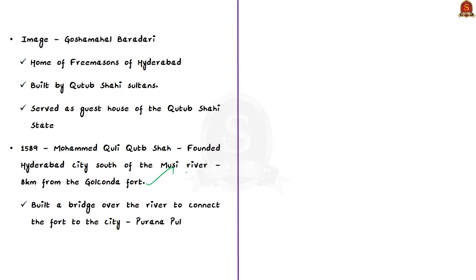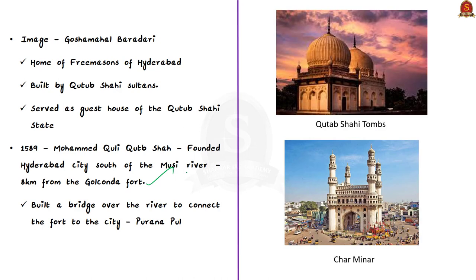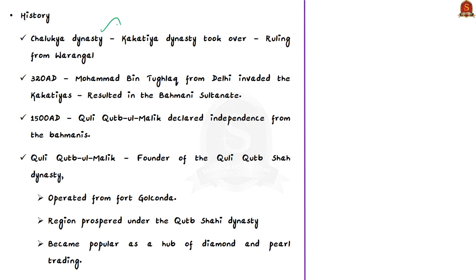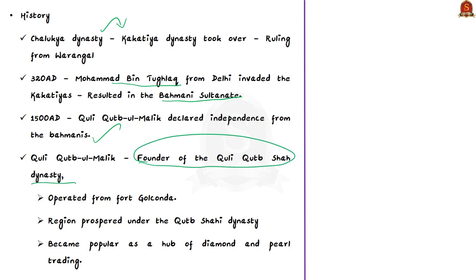After the end of the Chalukya dynasty, the Kakatiya dynasty ruled the area from Warangal, 180 kilometers from Hyderabad. Around 1320 AD, Mohamed bin Tughlaq invaded the Kakatiyas from Delhi, resulting in the Bahmani Sultanate. During 1580, Quli Qutb ul-Mulk declared independence from the Bahmanis and founded the Qutb Shahi dynasty, operating from Golconda Fort — built by the Kakatiyas. The region prospered under the dynasty, becoming a hub of diamond and pearl trading.